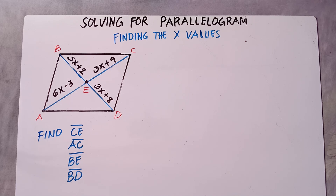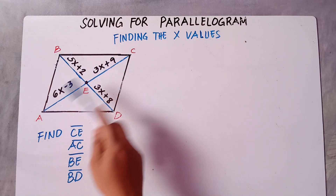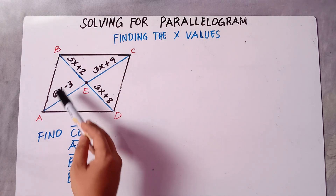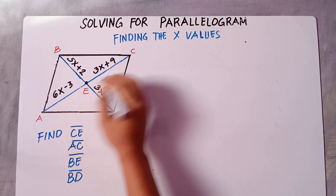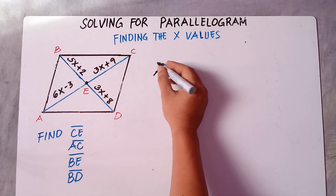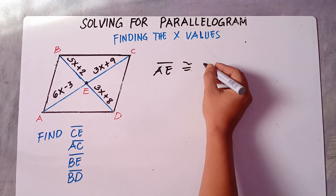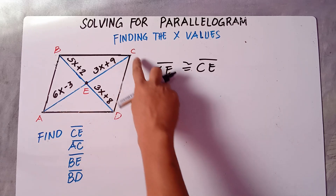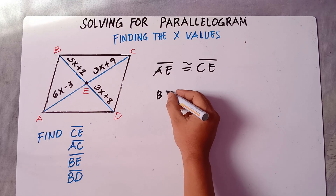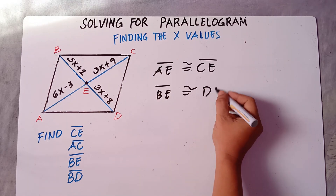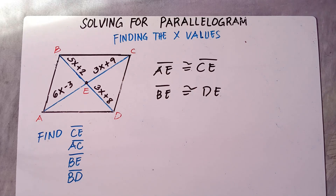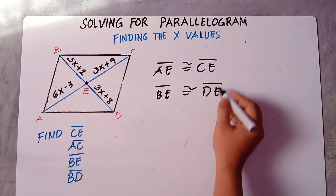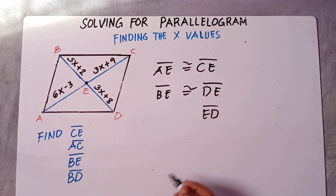So without further ado, let's do this topic. Now do not forget: if there are two diagonals inside the parallelogram and E is the midpoint, then line AE is congruent to line CE, and line BE is congruent to line DE. You can write ED or DE — that's the same. Most mathematicians arrange this in alphabetical order.